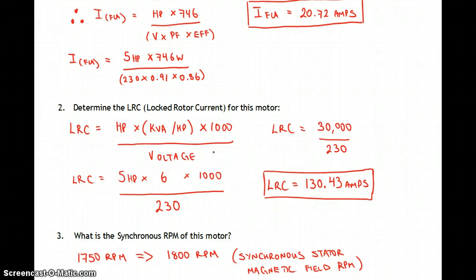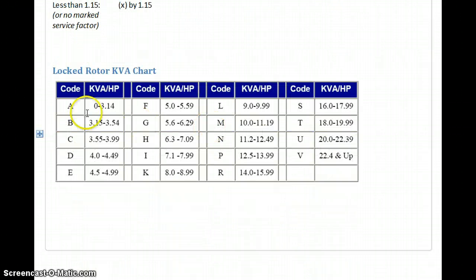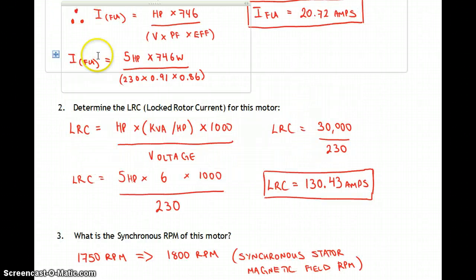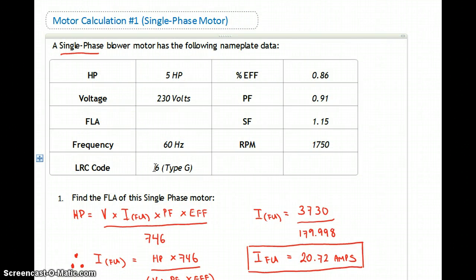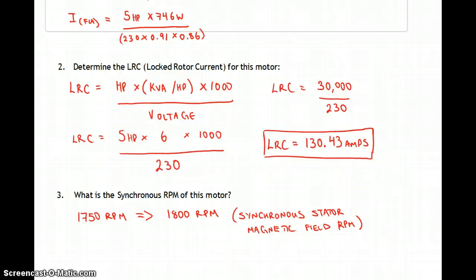Lock rotor current is the starting current, or when too much load stalls the motor — essentially the same condition as startup. Lock rotor current equals horsepower times kVA per horsepower times 1,000 over the voltage. The kVA per horsepower comes from the lock rotor kVA chart. For type G, that range is 5.66 to 6.29. If a specific value is given, use it — here it's 6. So: 5 horsepower times 6 times 1,000 over 230 gives a lock rotor current of 130.43 amps.